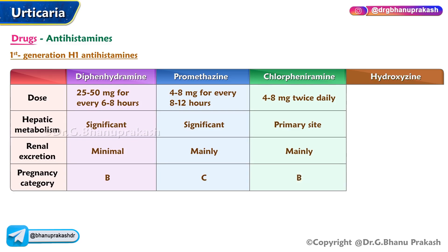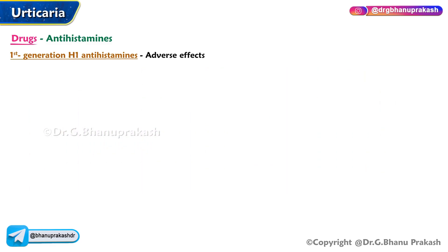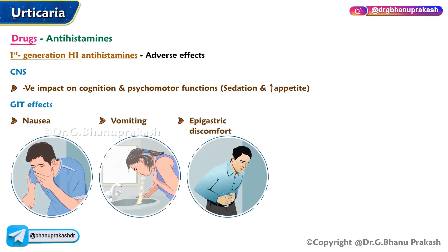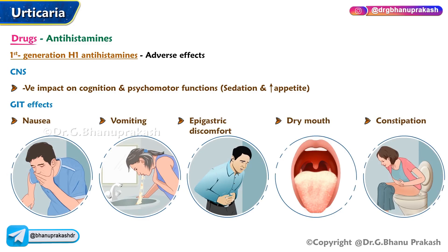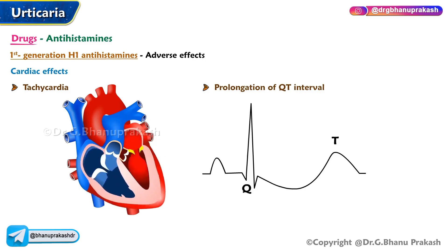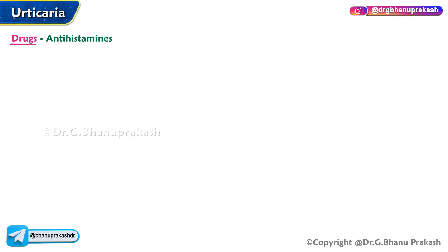Hydroxyzine dose: 12.5 to 25 milligrams every six to eight hours; primary site of metabolism is the liver, approximately 70% renal excretion, pregnancy category C. Adverse effects of first-generation antihistamines: CNS effects include negative impact on cognition and psychomotor functions, sedation, and increased appetite. GI effects include nausea, vomiting, epigastric discomfort, dry mouth, and constipation. Cardiac effects include tachycardia and QT interval prolongation. Genitourinary effects include urinary retention and erectile dysfunction.